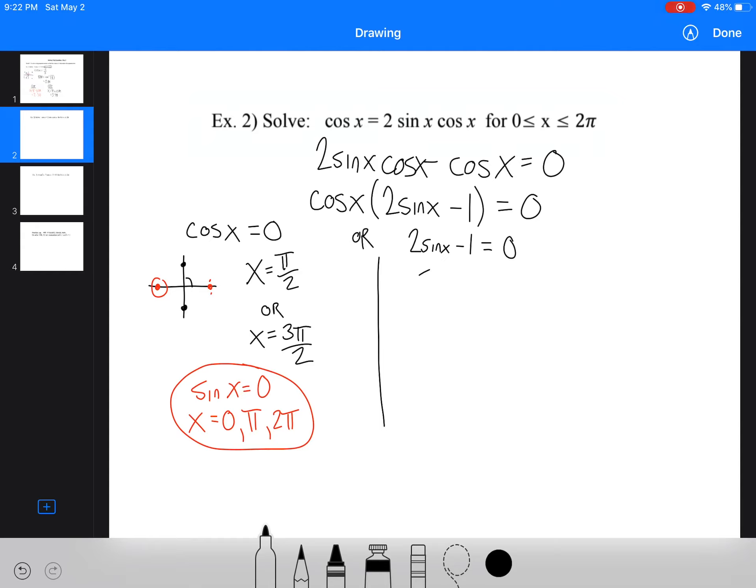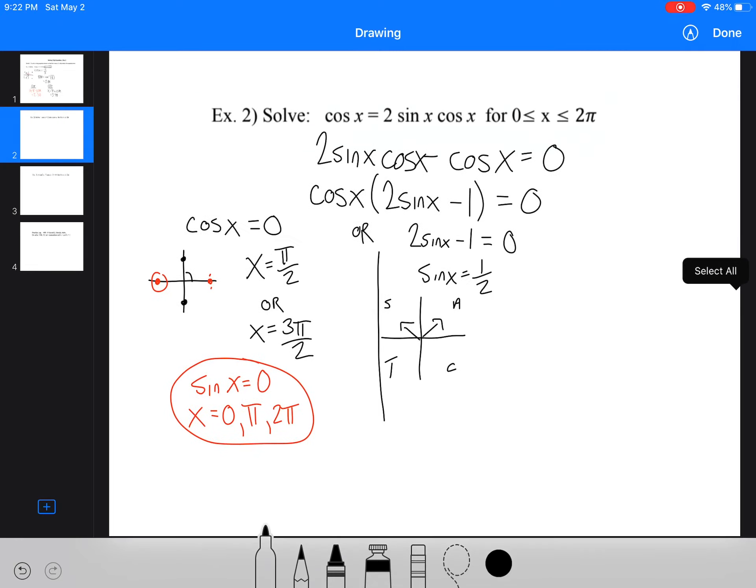So we have sin x equals 1 half. Now, sin x equals 1 half is going to happen in quadrants 1 and 2 from our cast rule. Now, we need to think about our unit circle, because when does sin x equal 1 half? Well, if we're thinking about our unit circle, you might not remember it, but what if we're looking at our special triangles?